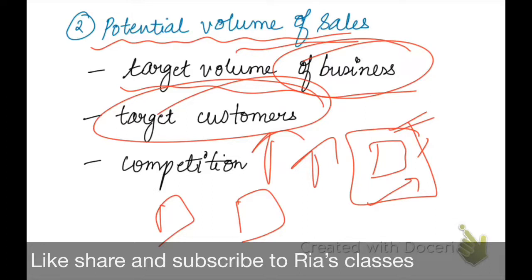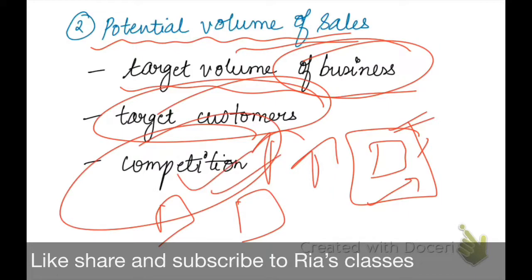In all such cases, we need to expand and find new locations, and also increase our channel members. Since a producer cannot go everywhere and open outlets by themselves, they will hire middlemen who will deliver the product to the customer on their behalf. Here it is also very important to observe our competitors — what kind of channels they are using, what their volume of sales is — so that we can work in a cost-efficient manner and make decisions with respect to volume of sales.